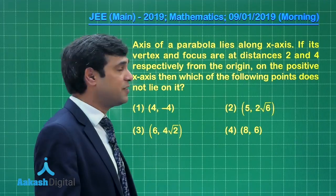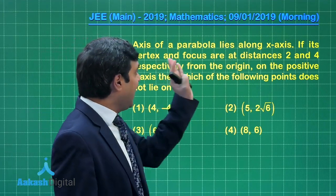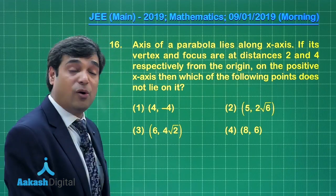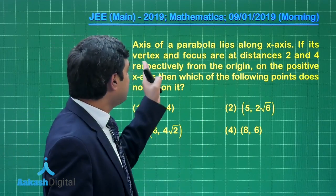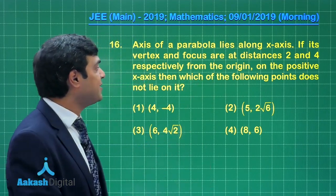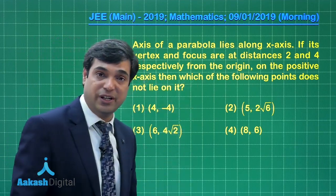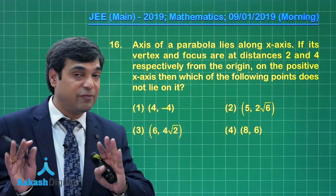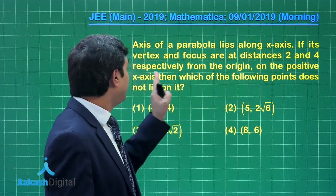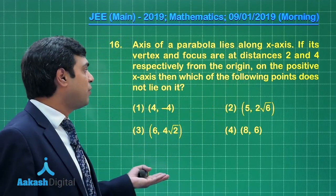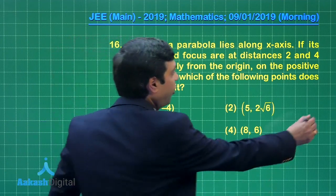Let us take up the next one, question number 16. Axis of a parabola lies along x-axis. If its vertex and focus are at distances 2 units and 4 units respectively from origin on the positive x-axis, then which of the following points does not lie on it?